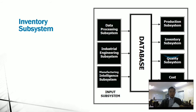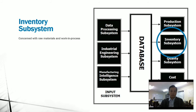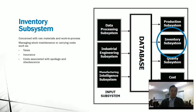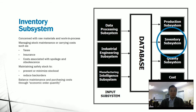The next output subsystem is the inventory subsystem. It is concerned with raw materials and work-in-process. It also manages stock maintenance and carrying costs, such as taxes, insurance, and costs associated with spoilage and obsolescence. Inventory subsystems balance maintenance and purchasing costs through economic order quantity, as it is important for an organization to have lower purchasing and maintenance costs in the production of a finished product.